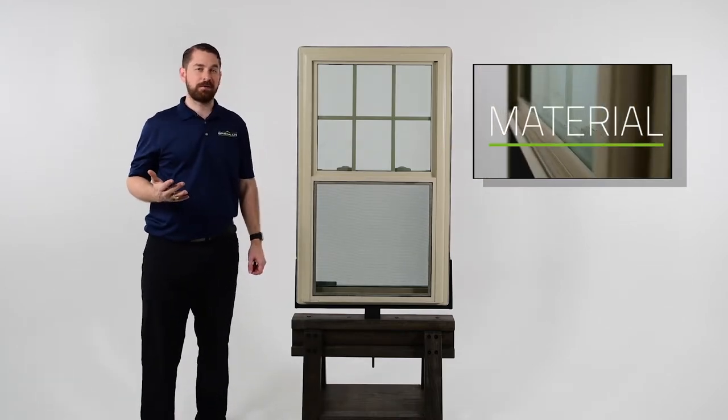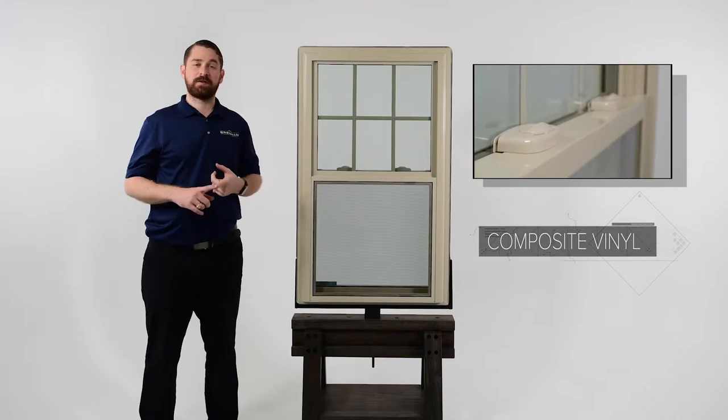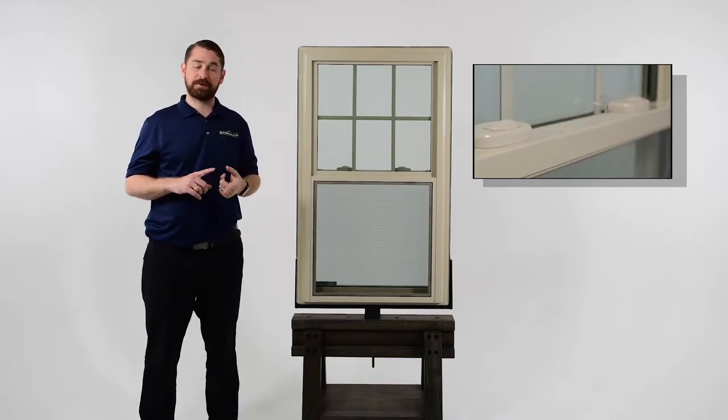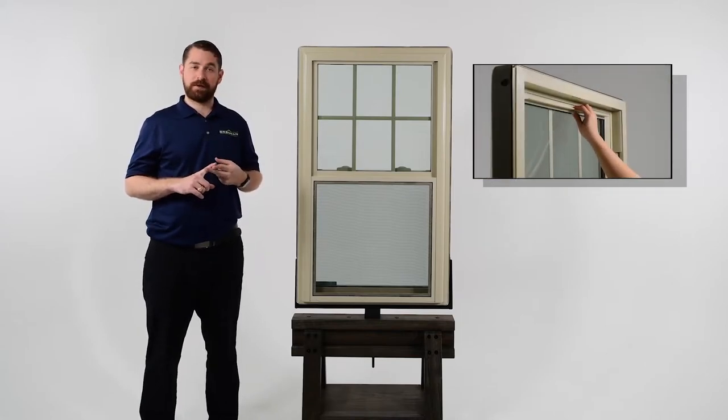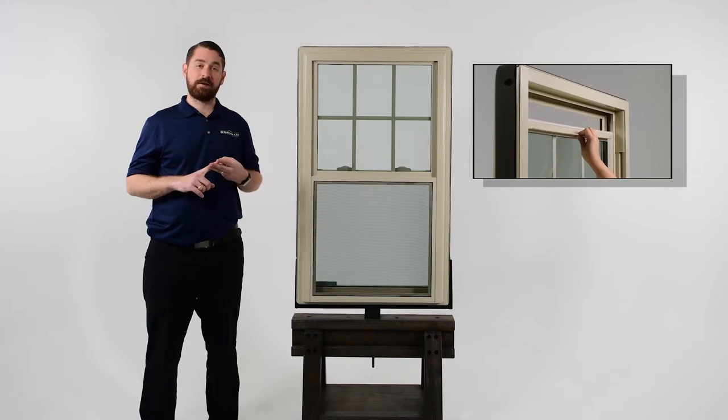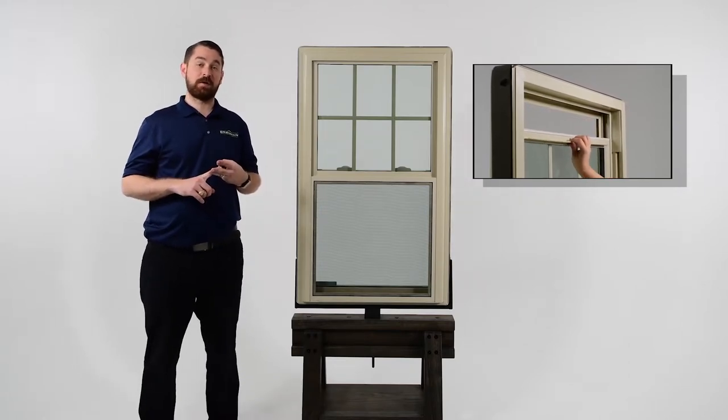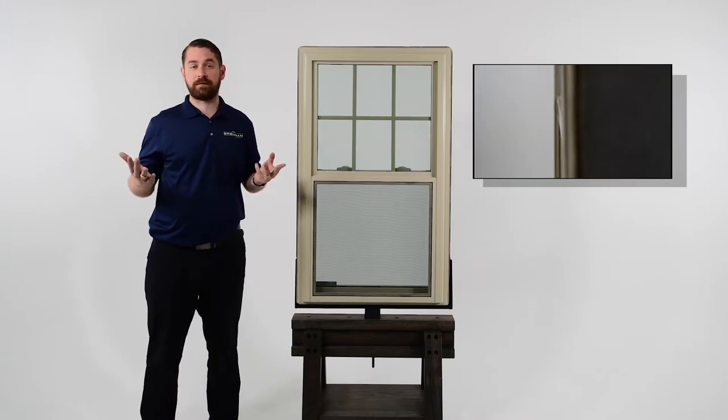Next we'll talk about material. The Traditions windows are made out of a composite vinyl material. Vinyl is a good option because it's affordable, it's durable, and it's rot-free. Insects don't eat it. It's a zero maintenance material for windows, which makes it excellent.